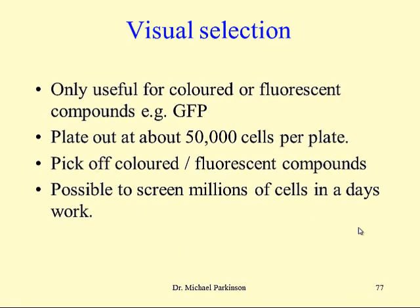Visual selection is used very extensively. It's only useful for coloured or fluorescent compounds — for example, green fluorescent protein from jellyfish. The normal protocol is to plate out your cells and pick off the coloured or fluorescent colonies. Using this method it's possible to screen millions of cells in a day's work.